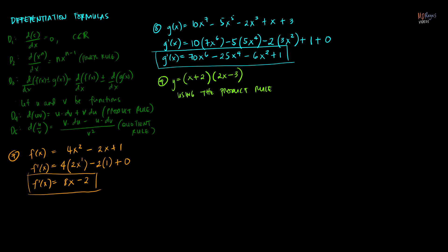Using the product rule, this is the product of u and v. The first factor is u and the second factor is v, so u is equal to x plus 2 and v is equal to 2x minus 3. We'll need the derivative of u and the derivative of v in the formula. The derivative of u is the derivative of x plus 2, which equals the derivative of x plus the derivative of 2 — that's 1 plus 0, equal to 1.